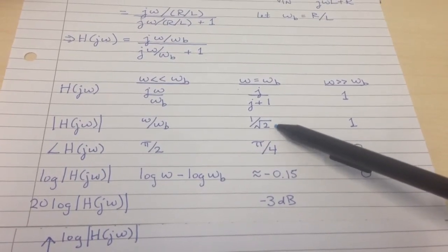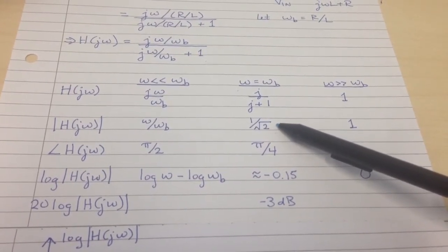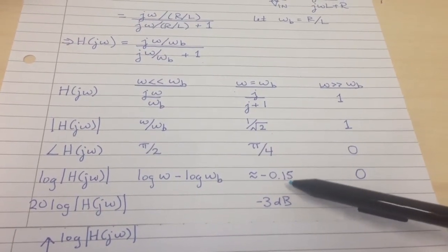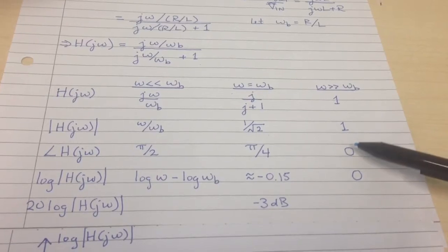The second limit here where omega equals omega B, we take the logarithm of that and we get about minus 0.15. And finally, the log of 1 is 0.